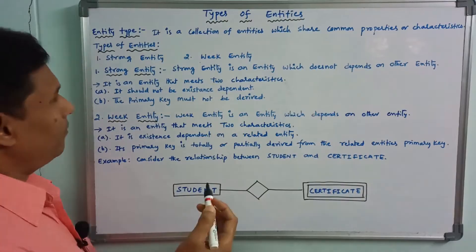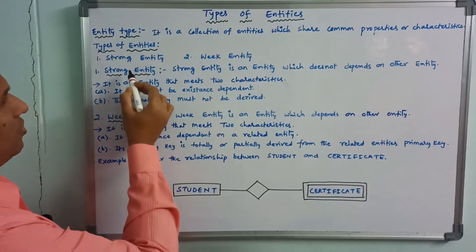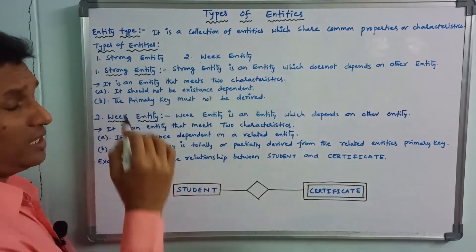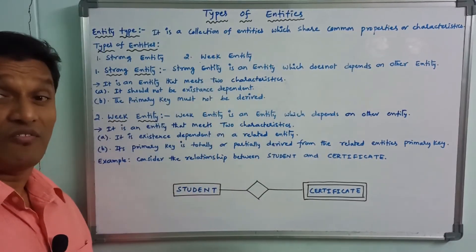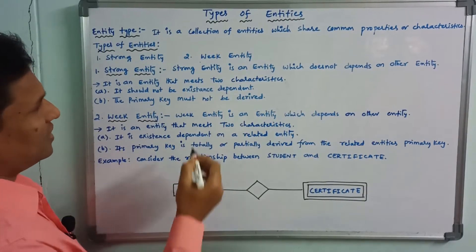Types of entities. There are two types of entities: first, strong entity; second, weak entity.